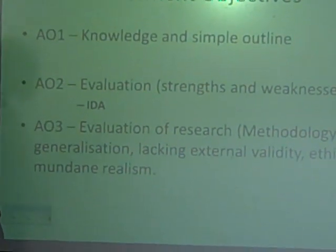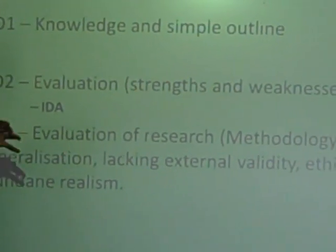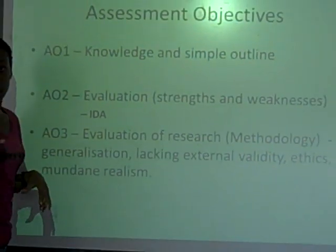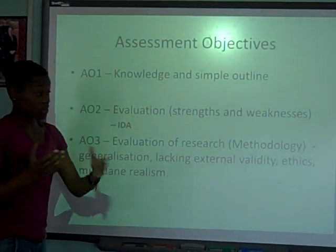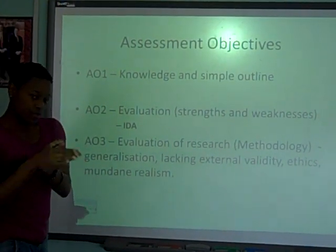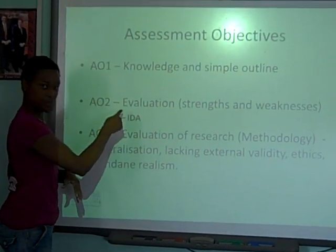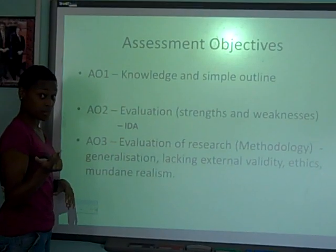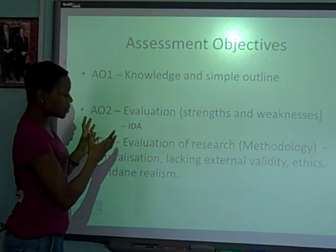Then we have Assessment Objective 2. You're going to have to stretch yourself a little bit here. What they're looking for is an evaluation. An evaluation comprises the strengths and the weaknesses — for example, the strengths and weaknesses of the evolutionary approach, or the strengths and weaknesses of Bandura. IDA will also be credited in your AO2, so don't forget that — it's really important. You're looking at around 12 marks for AO2.